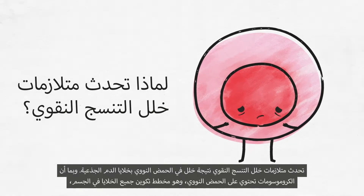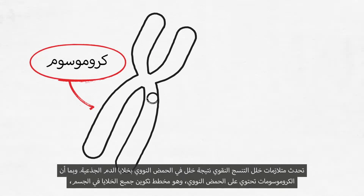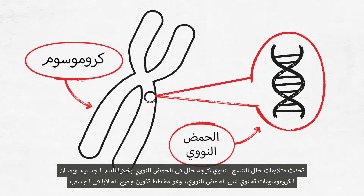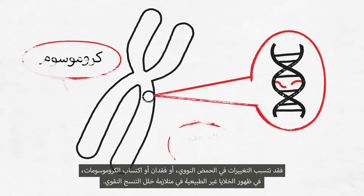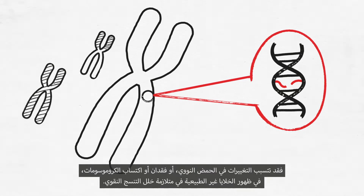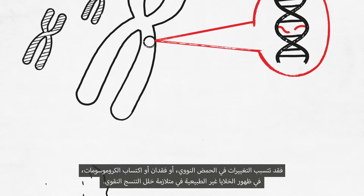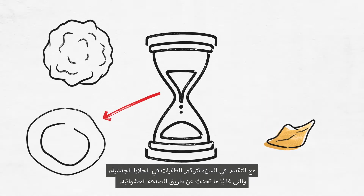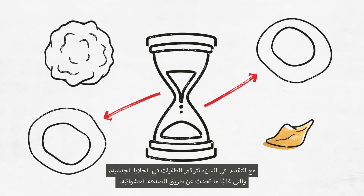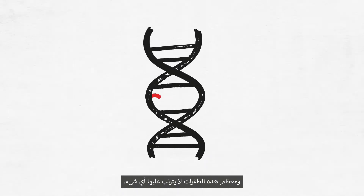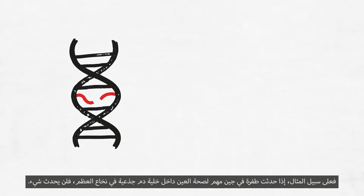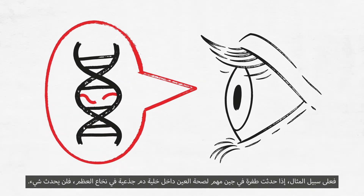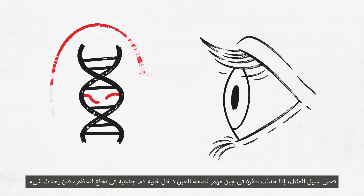Why does MDS happen? MDS is a result of faulty DNA in blood stem cells. Chromosomes contain DNA — the blueprint for making all cells in the body. Changes in the DNA, or loss or gain of chromosomes, can cause the abnormal cells seen in MDS. With aging, mutations accumulate in stem cells mostly by random chance. Most of these mutations are of no consequence — for example, if a mutation in a gene important for eye health occurs in a blood stem cell in the bone marrow, nothing will happen.